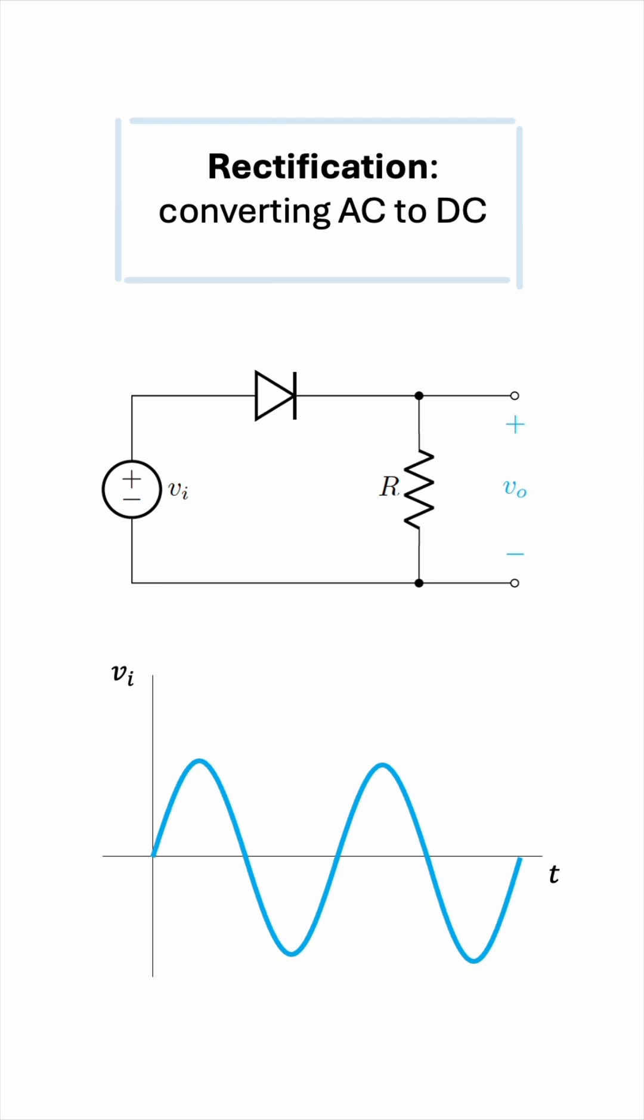Therefore, current will only reach the resistor during the positive half cycles, when the diode is switched on. The output voltage will therefore look something like this.